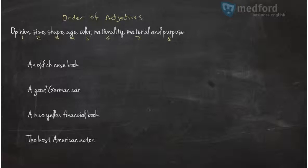So you have 8 possibilities and you have to put it in this order. Let's take a look at this example here. An old Chinese book.